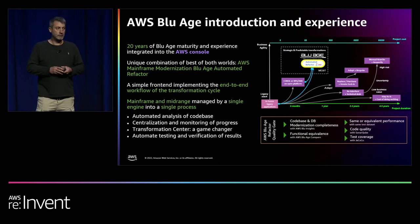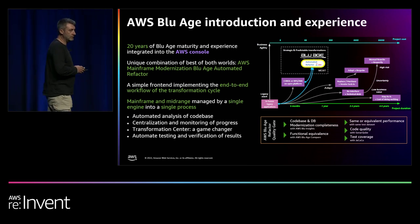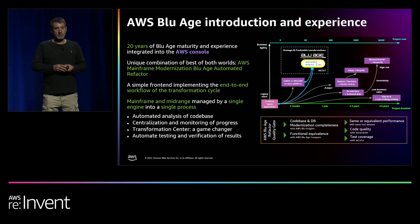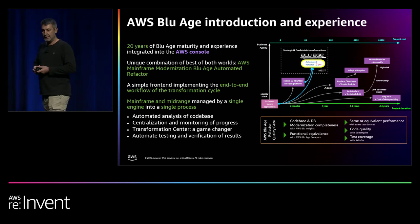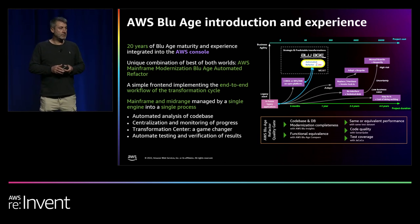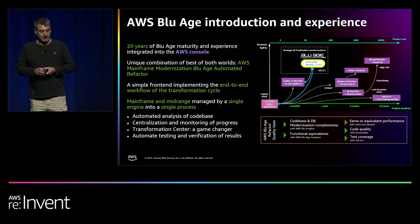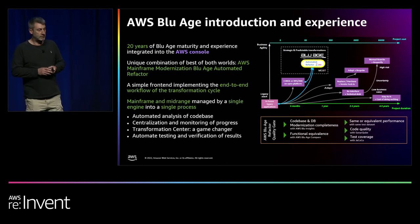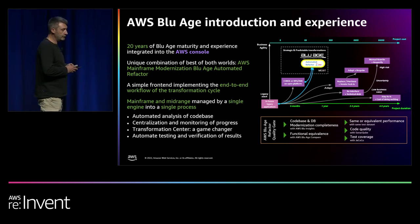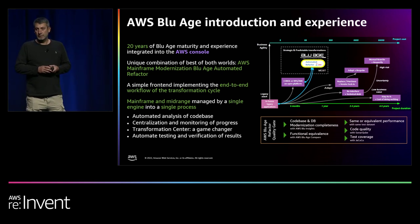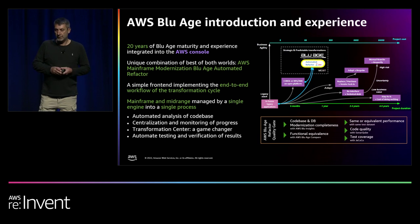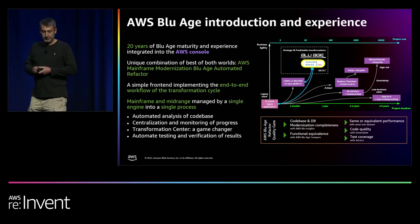The second pillar we engage on is functional equivalence — meaning the application will be re-architected into a different technology but will behave equally the same. We demonstrate this by recording test cases on the legacy and replaying them automatically on the target to produce exactly the same result. The same approach applies to non-functional requirements such as performance: we engage for equal or better batch duration and equal or better response time for APIs and screen-based scenarios.